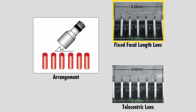You can think of it like you're standing on a railroad track. Even though you know the tracks are parallel to each other, they still appear to be coming at an angle. But with a telecentric lens, this parallax issue is resolved. All of the pins side by side will appear to come straight up at you, and you'll be able to see the top of each pin equally.